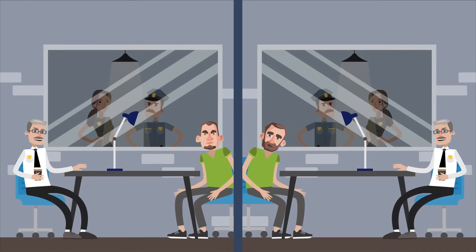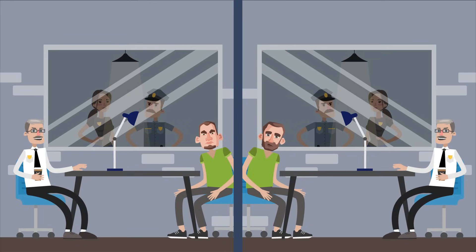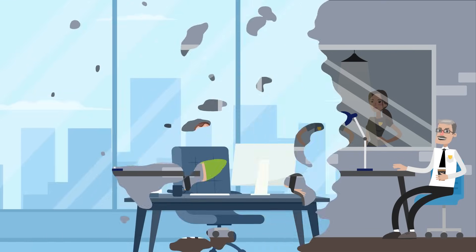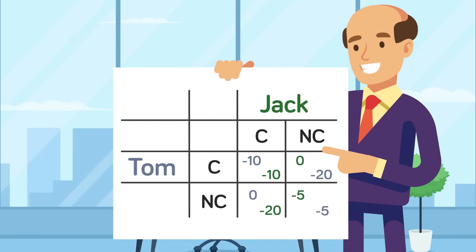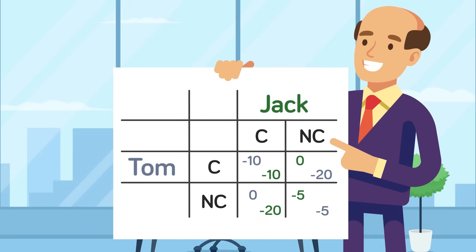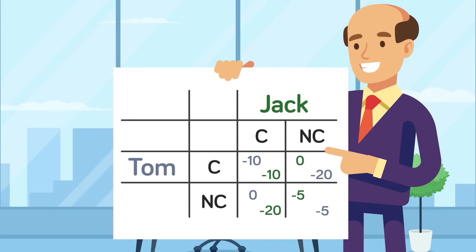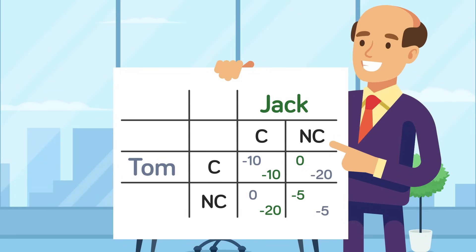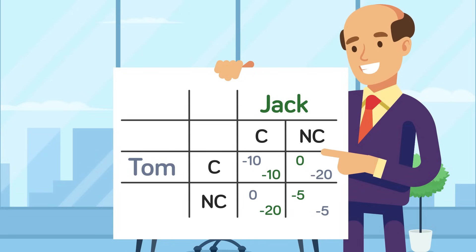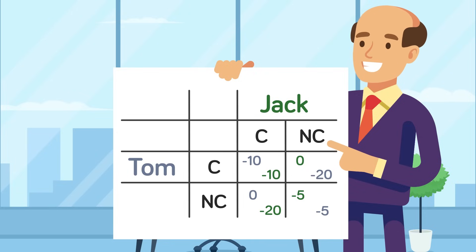If neither person confesses, they will both get 5 years for a different crime they were wanted for. The Prisoner's Dilemma contains the basic elements of a game: the two players are Jack and Tom, there are two strategies available — confess or don't confess — and the payoffs range from going free to serving 5, 10, or 20 years in prison. As Fundamental Finance explains, it's easier to see and compare these payoffs if they are put into a matrix. Since Tom's strategies are listed in rows, or the x-axis, his payoffs are listed first; Jack's payoffs are listed second because his strategies are in columns, or on the y-axis.